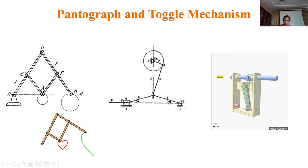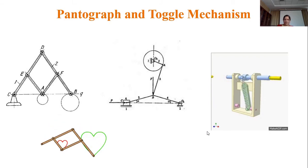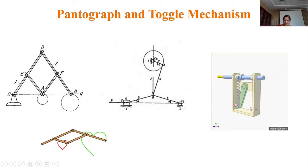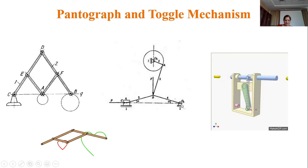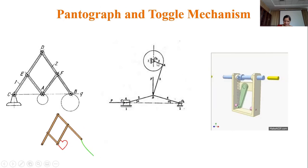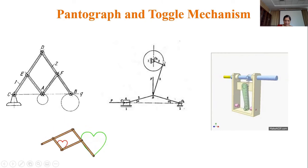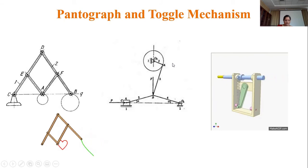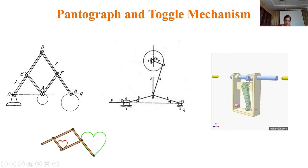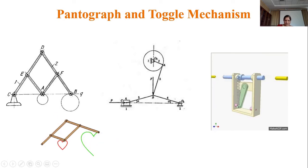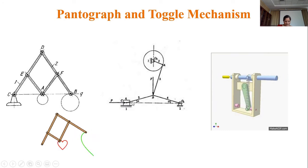In the toggle mechanism, as the crank (link 2) approaches one of its dead center positions, the movement of the slider approaches zero. The ratio of the crank moment to the slider moment approaches infinity, which is proportional to the mechanical advantage. This principle is used in the toggle mechanism.